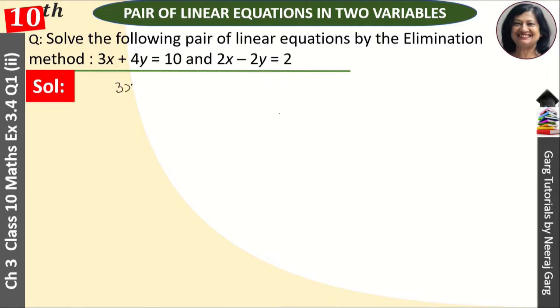The first equation is 3x plus 4y is equal to 10. The second equation is 2x minus 2y is equal to 2.